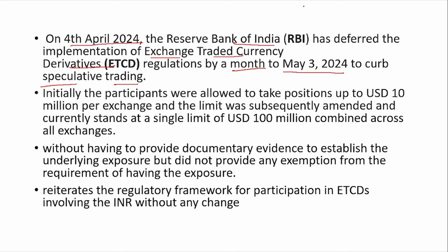Consider this example. There is an exporter who manufactures and exports mobile phones. He has received a purchase order for 100 mobile phones worth $10,000. The purchaser has told the exporter that after 2 months, you have to export 100 mobile units and I will give you $10,000 in return. This was the purchase order or invoice order.